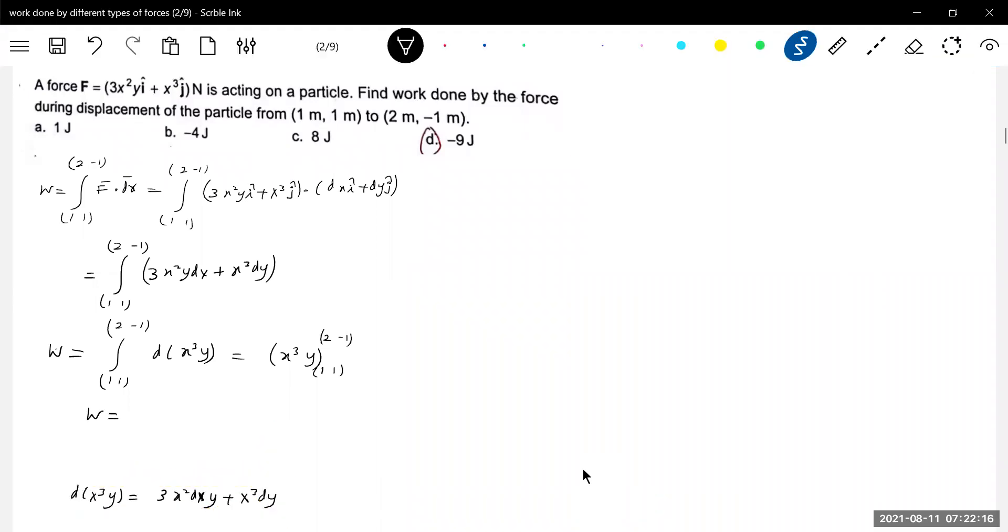Somewhere in the bottom I will write it. Okay, next again. How to substitute the limit here? So this will become first substitute the upper limit. So 2 cube minus 1, minus 1. Minus 1 cube into 1. 8, minus 8, minus 1, minus 9 joule.